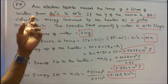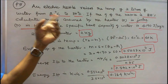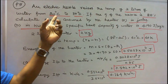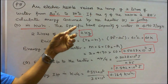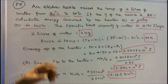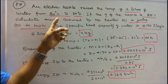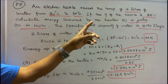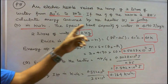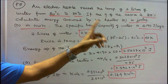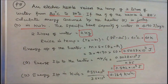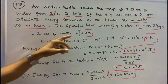Problem 5: An electric kettle raises the temperature of 2 liters of water from 20 degrees centigrade to 80 degrees centigrade. If the efficiency of the kettle is 85%, calculate the energy consumed by the heater: (A) in joules and (B) in kilowatt hours. The specific heat capacity of water is 4190 joules per kg kelvin. Assume 2 liters of water equals 2 kg.